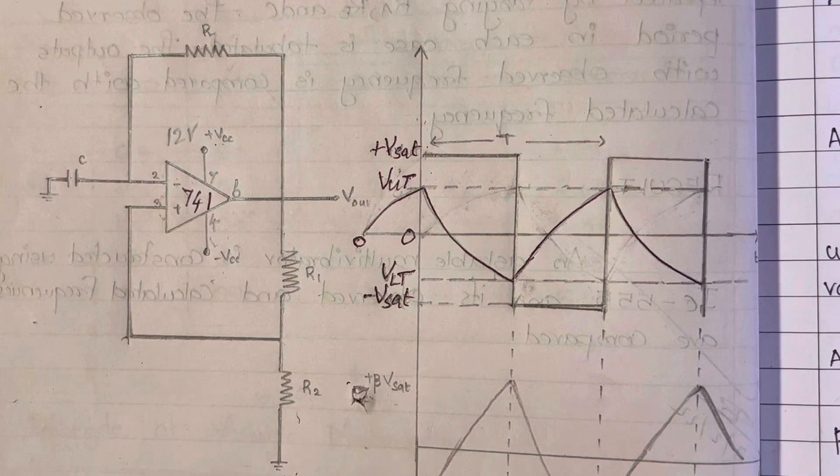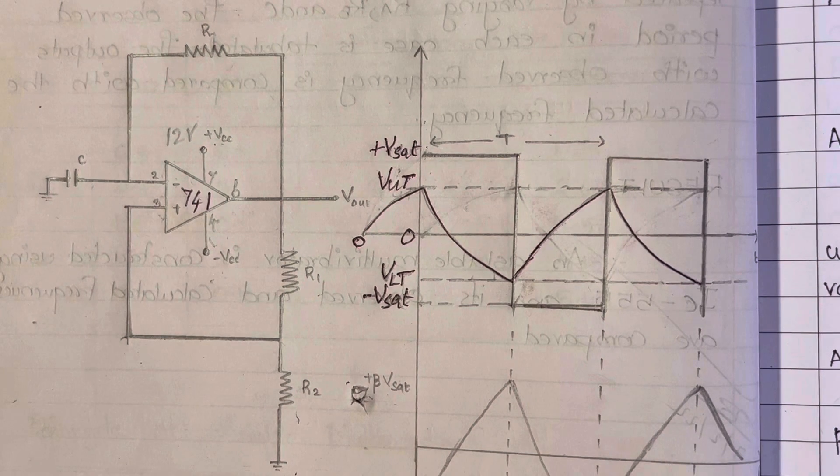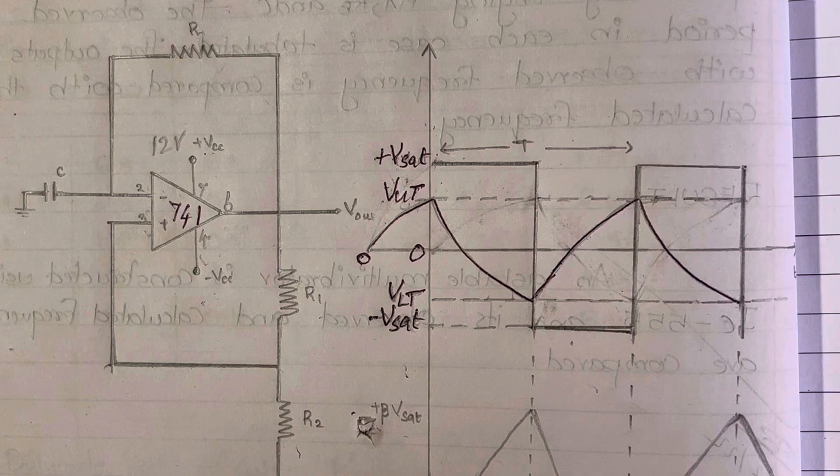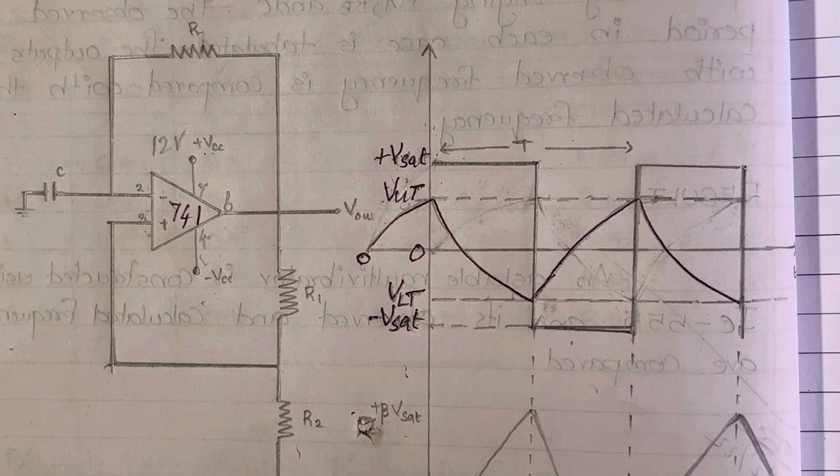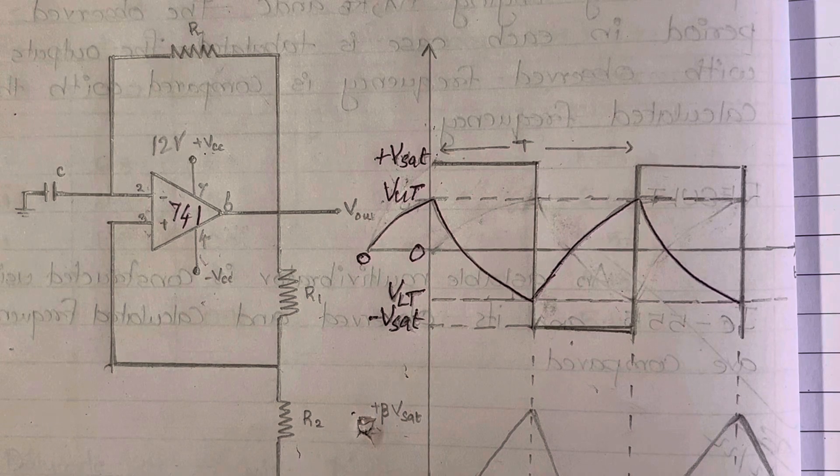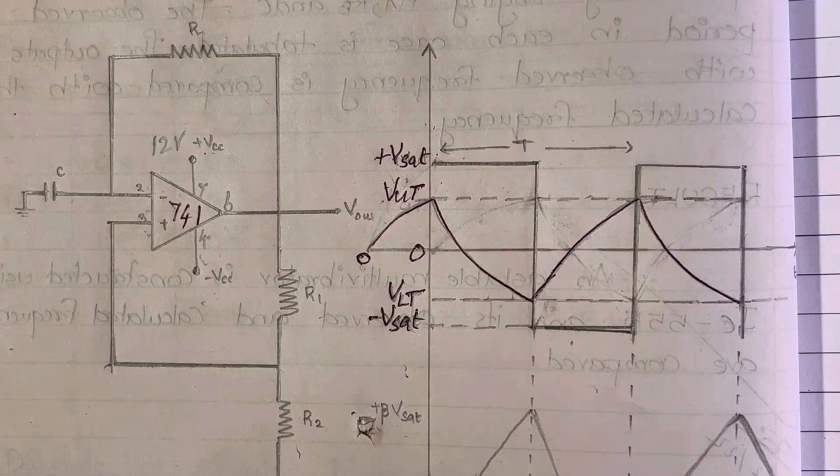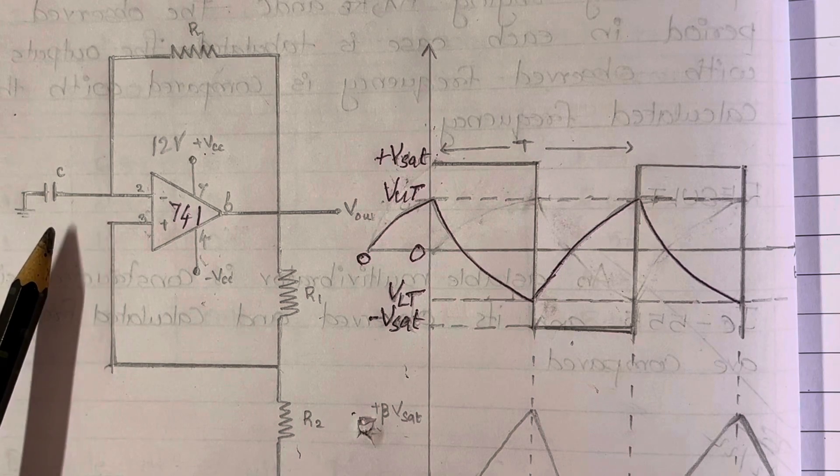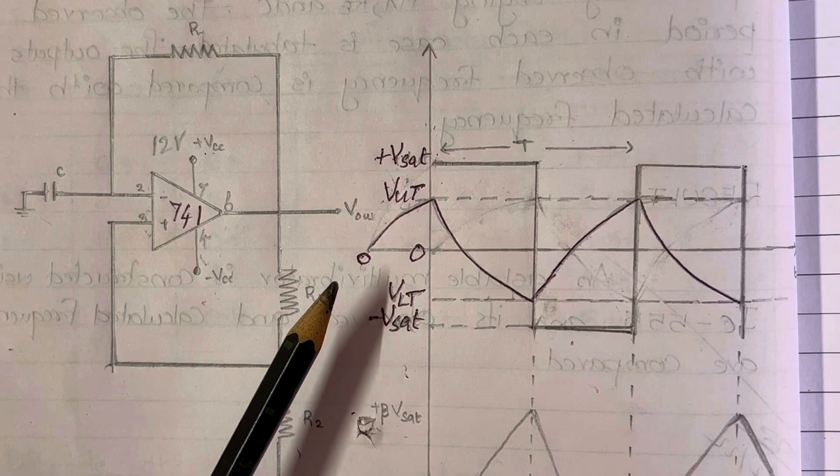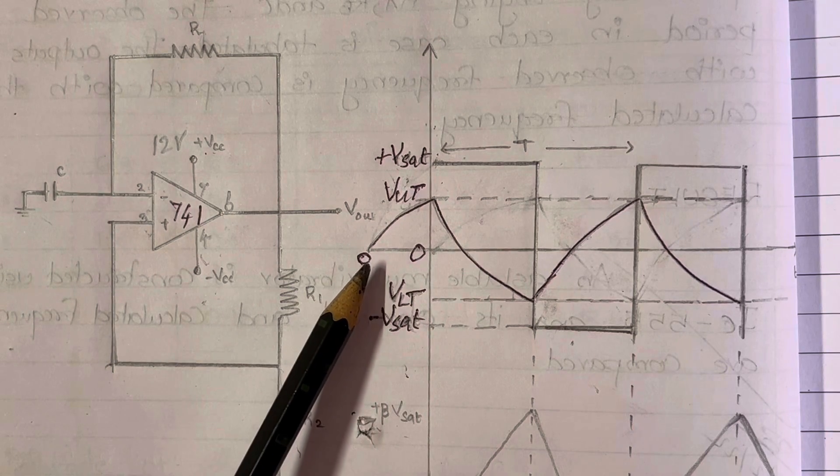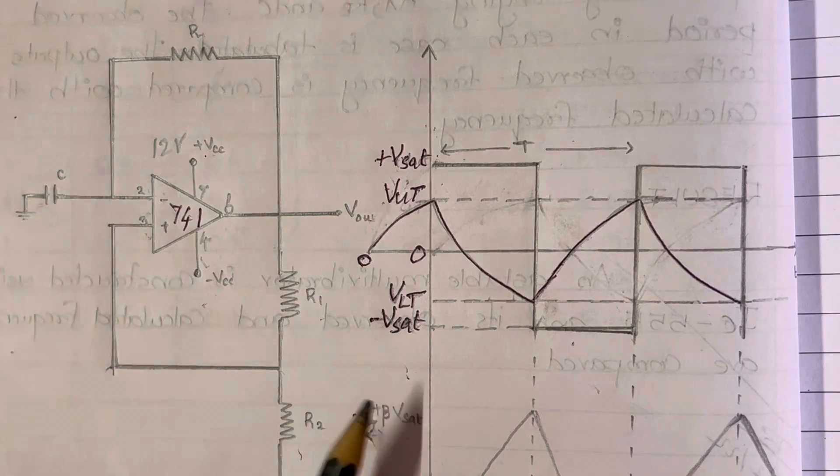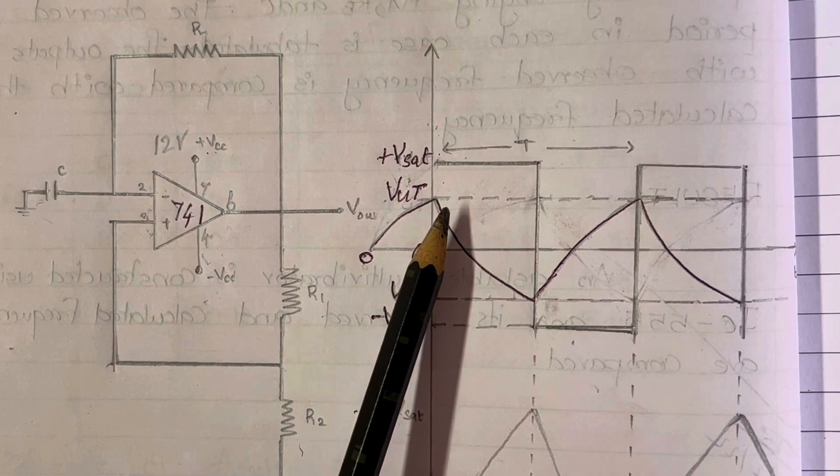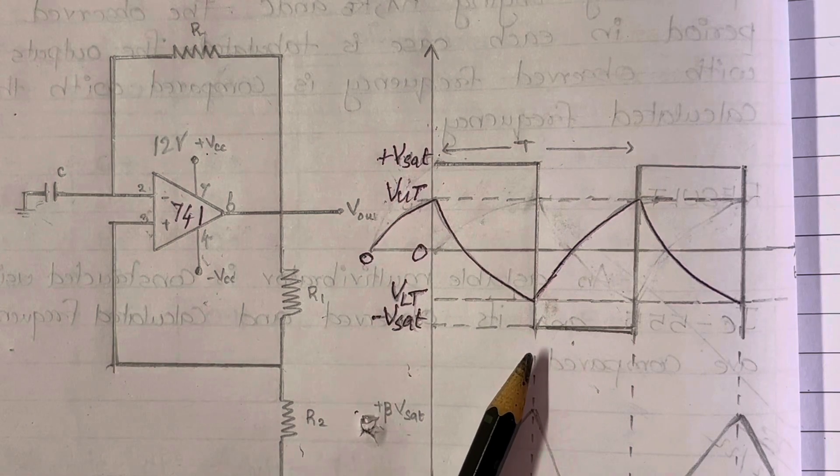Next we will pass on to the brief theory of the wave formation. The term astable indicates that it has no stable state. It oscillates between two states 0 and 1, giving out a square waveform. In the present circuit, op-amp works as a comparator. Initially let us consider the capacitor C is fully discharged and when the supply is on, it starts charging at the rate of RC constant. And when it reaches V upper threshold, the output changes from plus V saturation to minus V saturation.